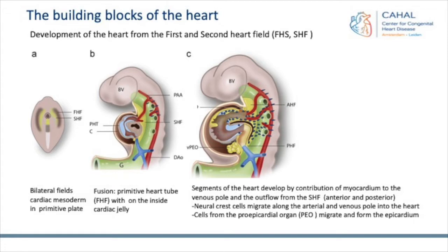Then you have the blue cells that migrate from the neural crest that also contribute to the outflow tract. And then you see here the cauliflower structure, which is a pre-epicardial organ, whose cells migrate over the heart to become the epicardium and also contribute to endosfibrosis formation.